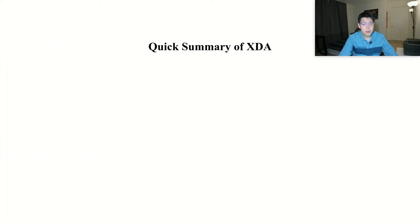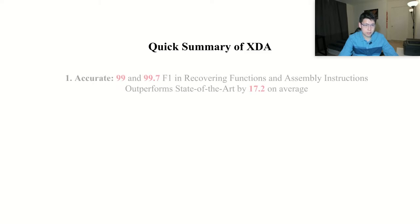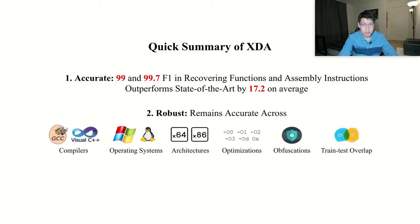In this paper, we propose XDA, an accurate, robust disassembler based on transfer learning. It is accurate. Our extensive empirical studies show that it achieves 99% and 99.7% F1 score, respectively, in recovering functions and assembly instructions, outperforming the state-of-the-arts by 17.2% on average. It also remains robust, achieving consistently high accuracy across different compilers, operating systems, architectures, optimization levels, obfuscations, and more importantly, on different training and testing overlap rates, including those that are strictly non-overlapping.